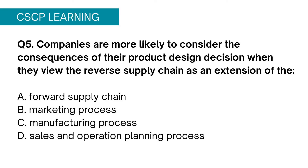Question 5: Companies are more likely to consider the consequences of their product design decisions when they view the reverse supply chain as an extension of the: Option A, forward supply chain; Option B, marketing process; Option C, manufacturing process; Option D, sales and operations planning process. Product design and packaging play a vital role in managing reverse supply chains. Product returns due to service, repair, or disposal are the core functions of the reverse supply chain. Therefore the answer is obvious — reverse supply chain is an extension of the forward supply chain. Option A is correct, and the other options have nothing to do with reverse supply chain.